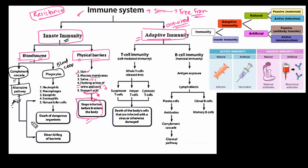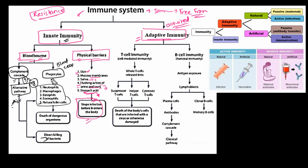The complement system consists of a group of proteins present in serum in an inactivated state. Upon entry of microbes or antigens, these proteins interact with the antigen, become activated, and a cascade is induced. That cascade leads to the direct killing of bacteria. These complement pathways also stimulate cells through chemotactic signals. We will learn the details of the complement system in its respective tutorial.